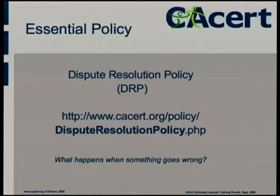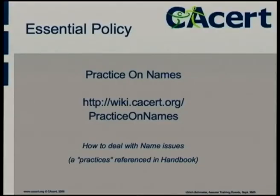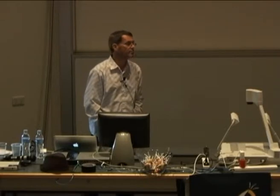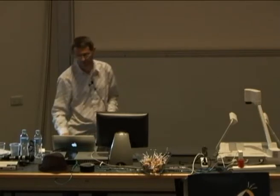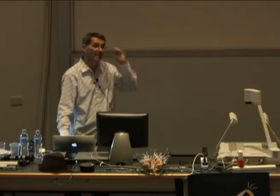Dispute resolution policy: this is the rules of arbitration. What happens when something goes wrong — this document will tell you about it. As an assurer, you need to know how this is handled. You don't need to understand the policy; you just need to know where it is and what it's about. Here's one that's kind of evolving: the practice on names. With assurance, we spend a lot of time — especially in countries like Europe — where they have strange names and different character sets. We spend a lot of time on what names can translate to what other names, especially with passports which are done in ASCII and various other countries which do their naming in different character sets. It doesn't really affect the Anglo naming system, but it does affect Europe and Asia a lot.